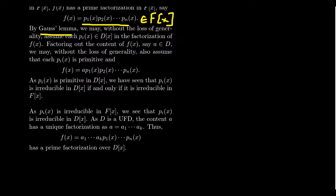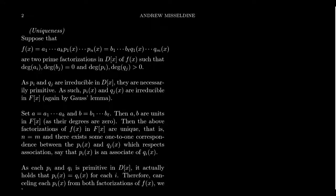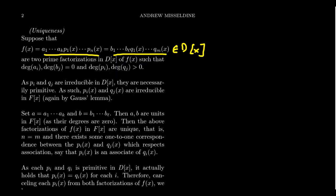Every non-zero, non-unit element needs a factorization — now why is it unique? Suppose F has two factorizations inside D[X]. The first has content factors A₁ through Aₖ and polynomial factors P₁ through Pₙ, each irreducible and therefore primitive in D[X]. The second factorization similarly has content factors B and primitive polynomial factors Q₁ through Qₘ, with the content also factored uniquely.